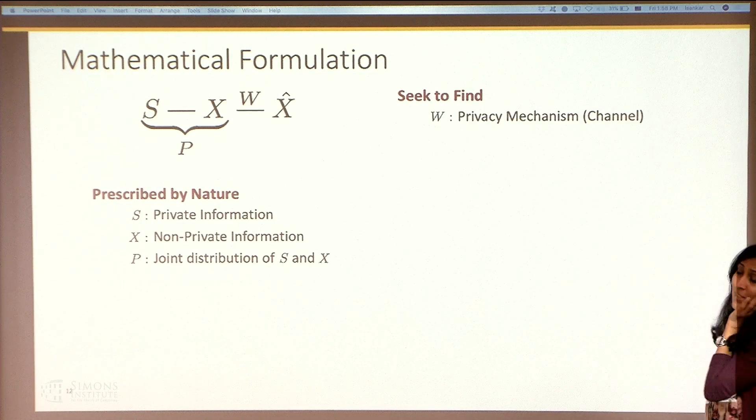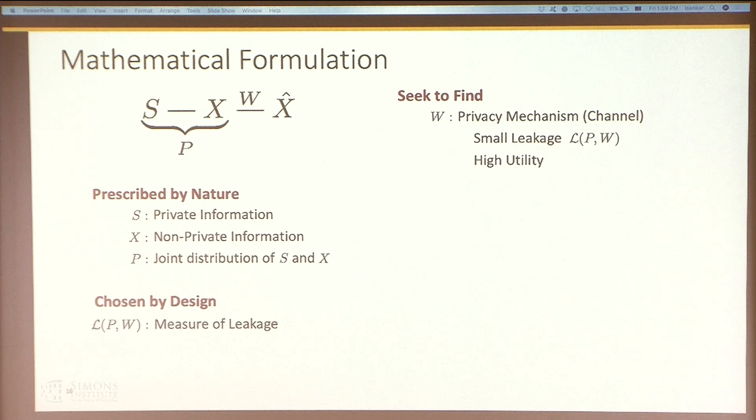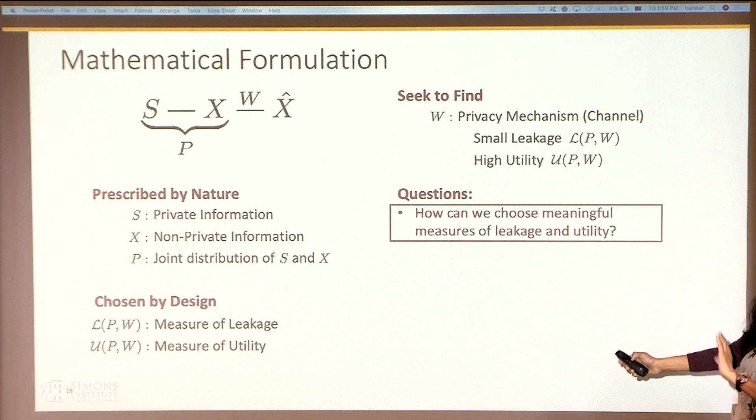And what we want to find is a mechanism W that X can be mapped to. So W is our privacy mechanism, and sometimes we want these things. So by chosen by design, what we can choose is a measure of leakage. For this talk, you can also choose utility. I'm not going to talk about utility, I'm just going to talk about leakage measures. So ignore this question. Terrible question, not at all useful.